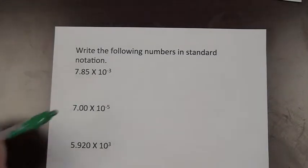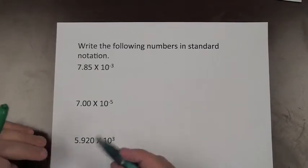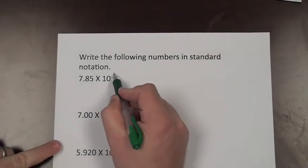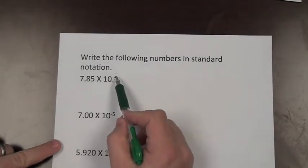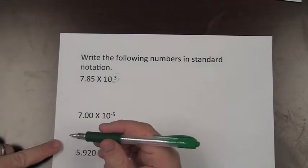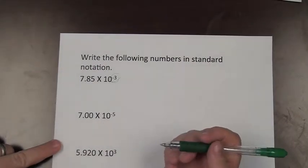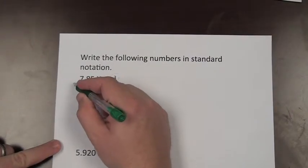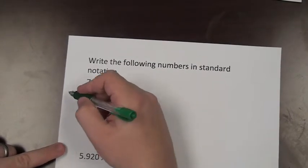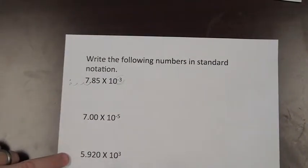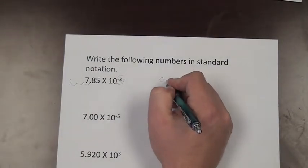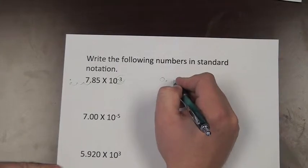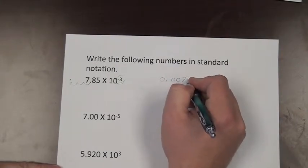Now let's look at examples going the other direction, from scientific notation to standard notation. For the first one with a negative 3 exponent, the negative tells us the number should be less than 1, meaning we had to move the decimal to the right, so to go back we move it to the left three places. Those empty places are filled with zeros, giving us 0.00785.